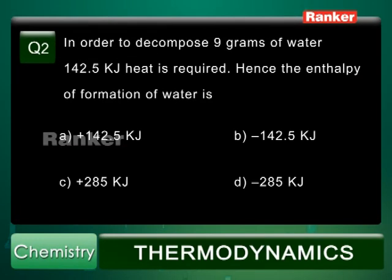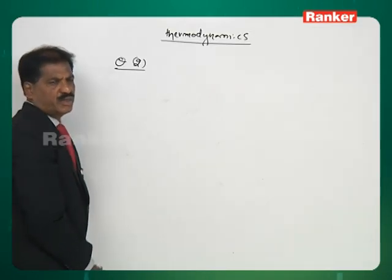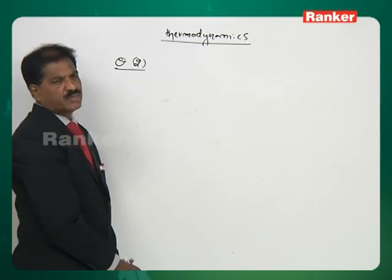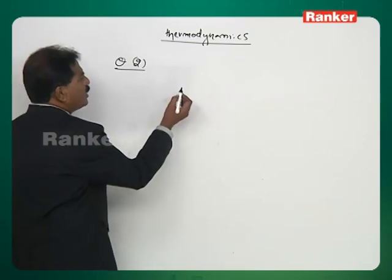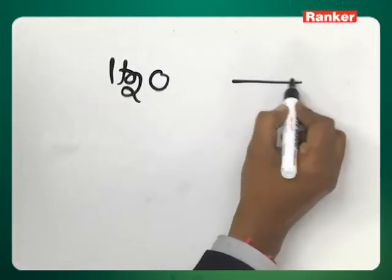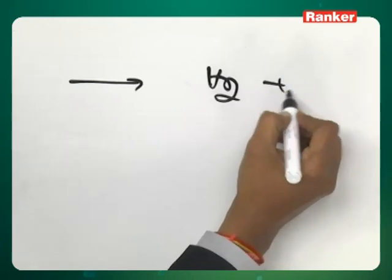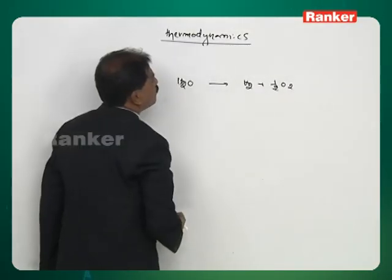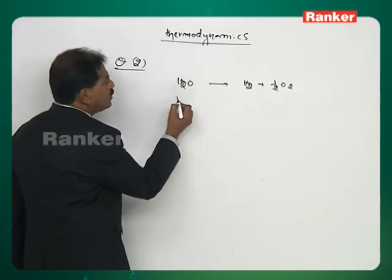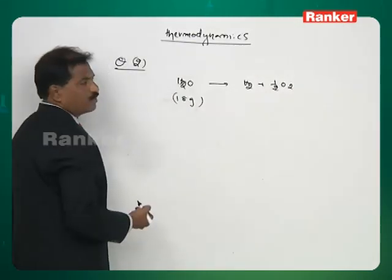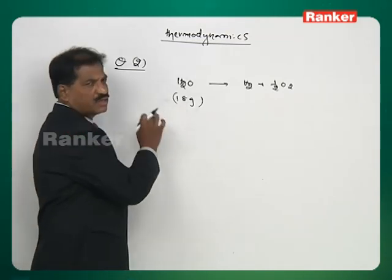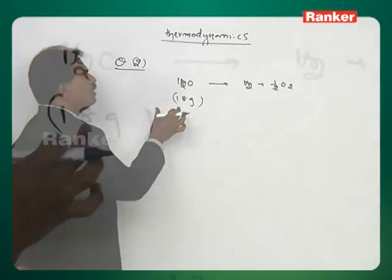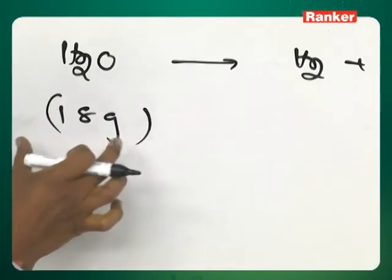Question number 2. In order to decompose 9 grams of water, 142.5 kilojoules of heat is required. Hence the enthalpy of formation of water is? The decomposition reaction of water involves 18 grams stoichiometrically, but the problem gives heat for 9 grams. So we first calculate heat required for 18 grams.